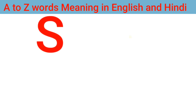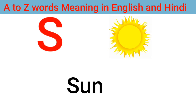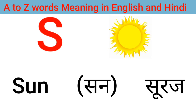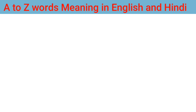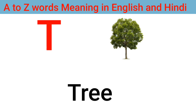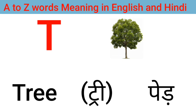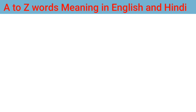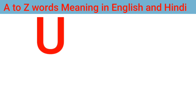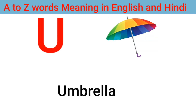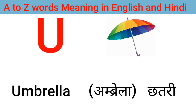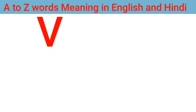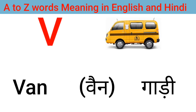S for sun, sun means suraj. T for tree, tree means peard. U for umbrella, umbrella means chitari. V for van, van means gari.